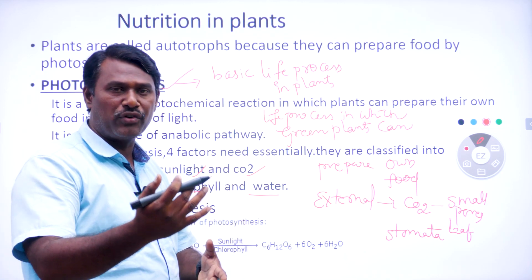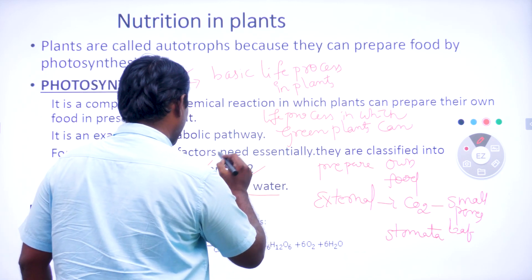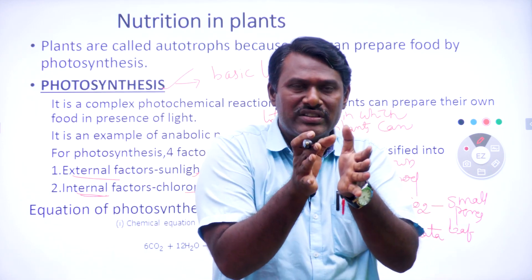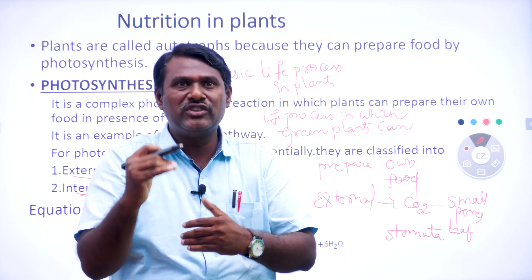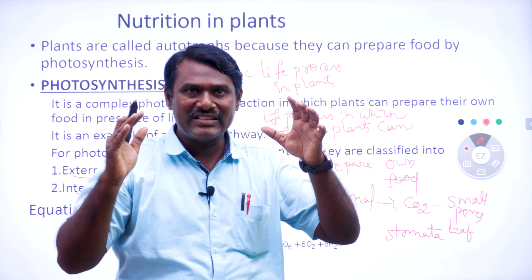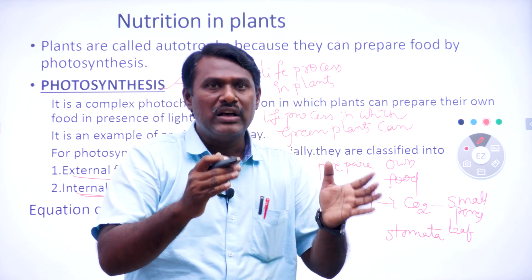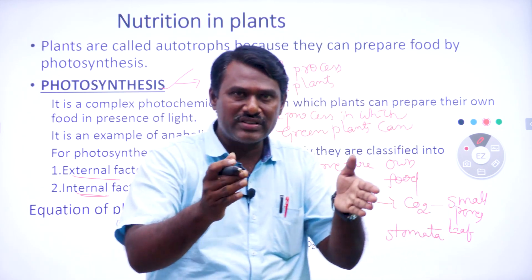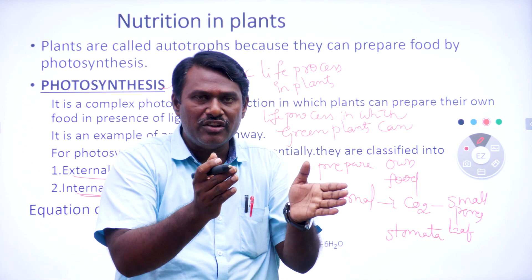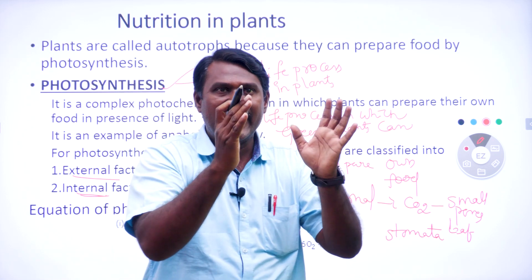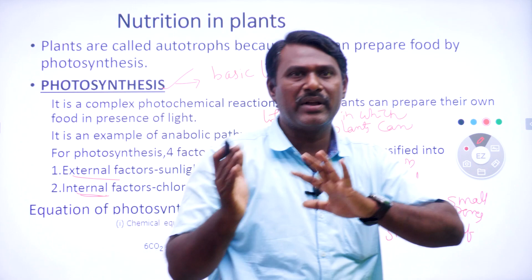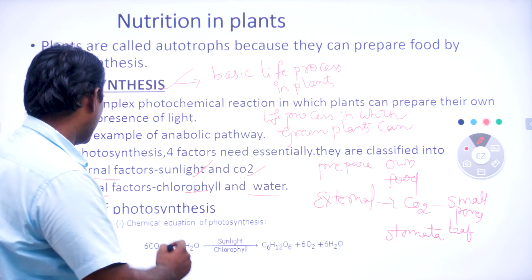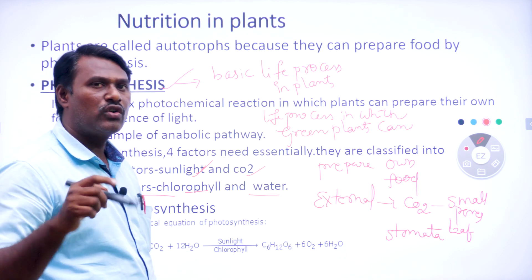The next component for photosynthesis is sunlight. Direct sunlight falls on the leaf. During photosynthesis, chlorophyll found in the leaf has the ability to convert light energy into chemical energy. Light energy, trapped by the chlorophyll of the leaf, is converted into chemical energy.